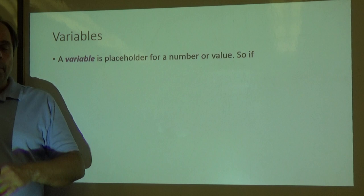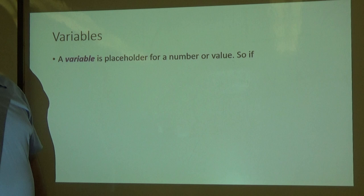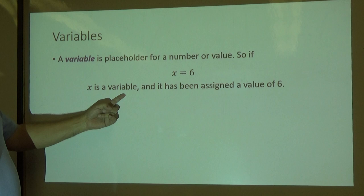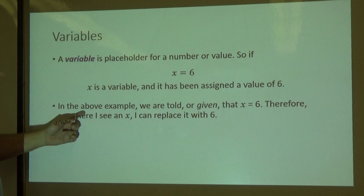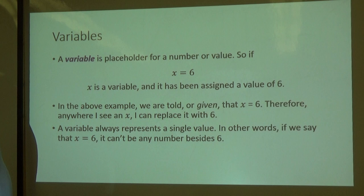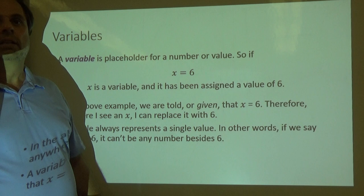Variables. You should remember this from Algebra 1, but here's a review in case you don't. A variable is a placeholder for a number or value. So if I say x equals 6, that means any time I've declared x as a variable and I've given it a value of 6. So in the above example, we are told or given that x is 6. Therefore, anywhere from now on I see an x, I know that it's the number 6. A variable always represents a single value. In other words, if we say that x is 6, it can't be some other number. It's now 6.